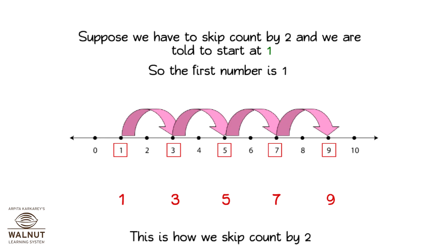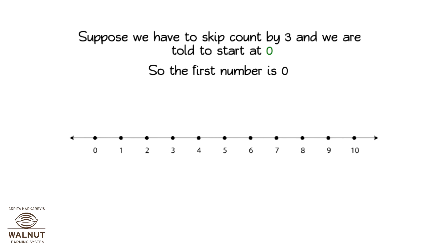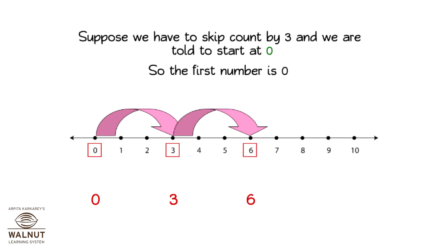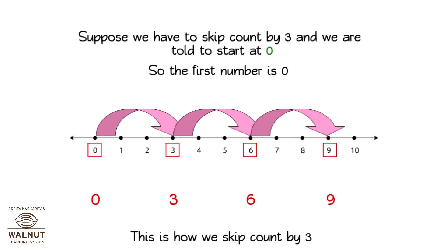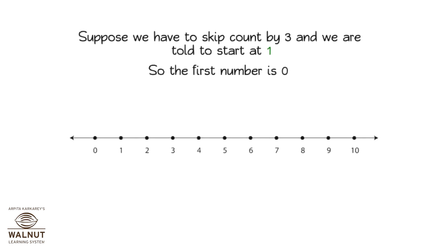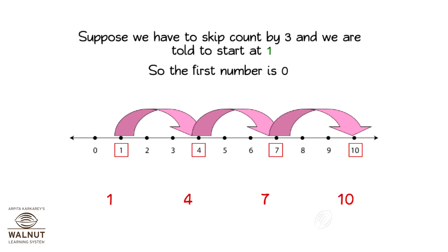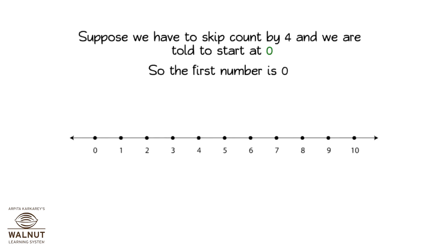Suppose we have to skip count by three and we are told to start at zero. So the first number is zero, then three, then six, then nine. This is how we skip count by three. Suppose we have to skip count by three and we are told to start at one. So the first number is one, then four, then seven, and then ten. This is how we skip count by three.